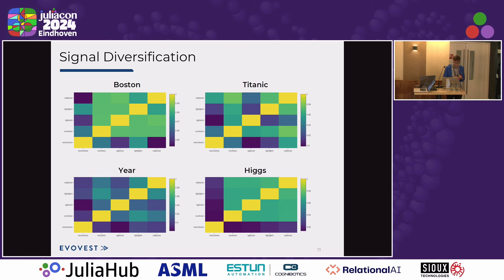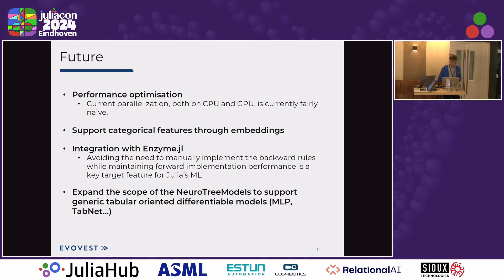An interesting aspect of the algorithm is that it can bring more signal diversification. What is shown here is the correlation between predictions across all benchmark algorithms — darker colors on the lower left indicate lower correlation, meaning higher ensembling potential by using NeuroTree's signal. Finally, some future directions: performance optimization, better support for categorical features through embedding, integration with Enzyme to remove custom gradients, and expanding the scope of NeuroTree models as a more general engine for tabular data.